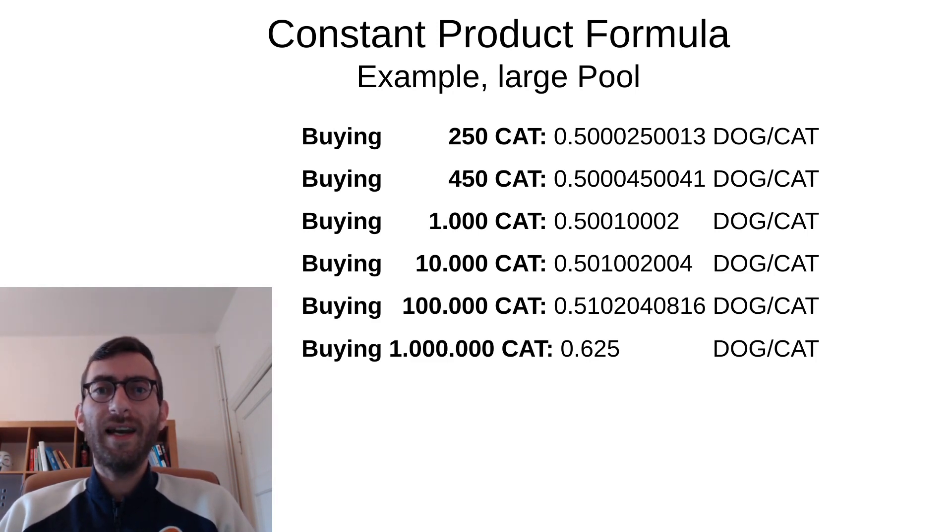And I have made a few more examples for this large pool to really show the difference here. For the 250 cat that gave us twice the market price before, so one dog per cat, we're still at about 0.5. For 450 cat, which gave us 10 times the market price in the smaller pool, we're still at about 0.5. And we only see a really noticeable deviation in the larger pool when we go up towards like a million cat tokens that I want to take out of the 5 million. So that's taking 20% out of the cat liquidity that the pool has. Then I have a noticeable increase in price up to 0.625 dog that I have to pay per cat.